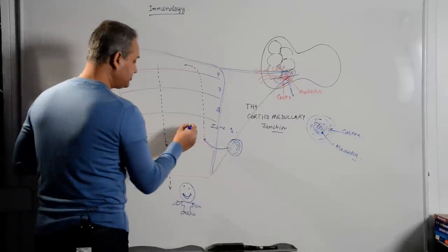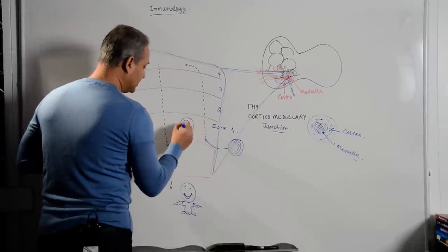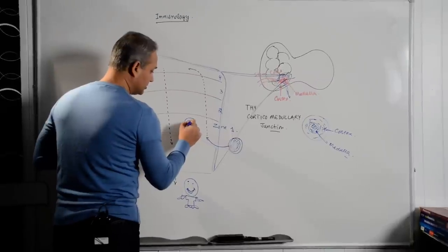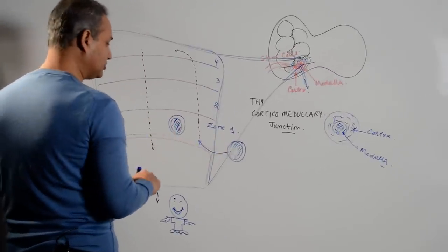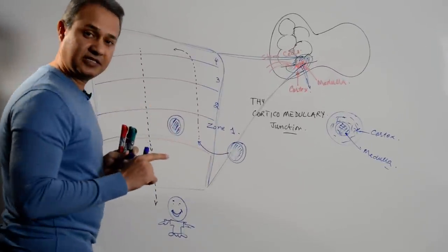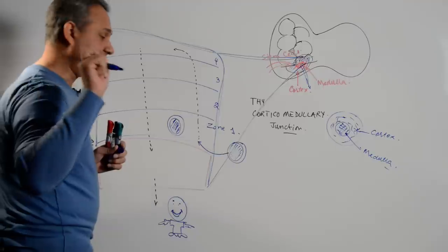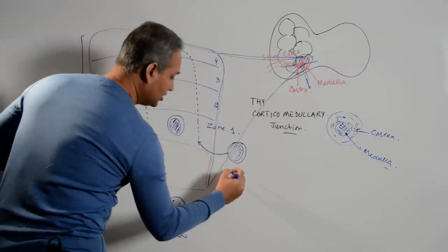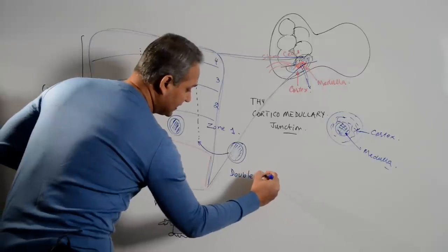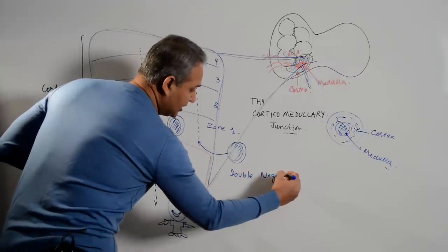Here this thymocyte, remember there's a stem cell, I'm calling it thymocyte. First characteristic, this thymocyte is double negative. Double, double negative. What does that mean?